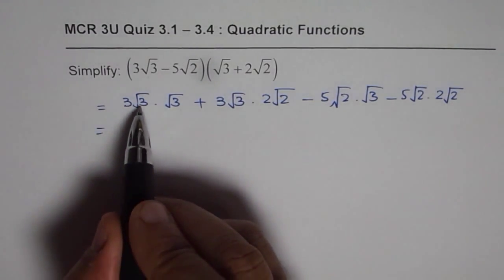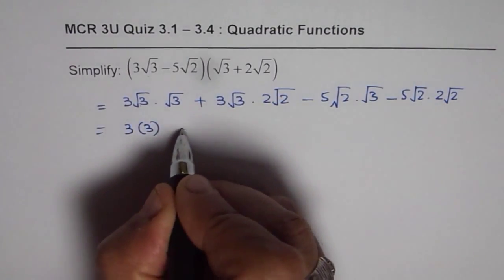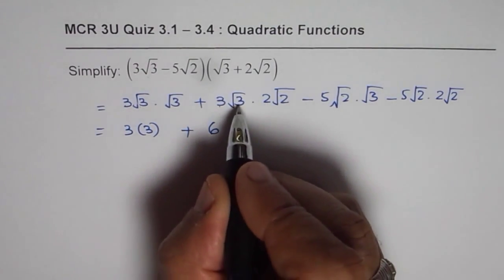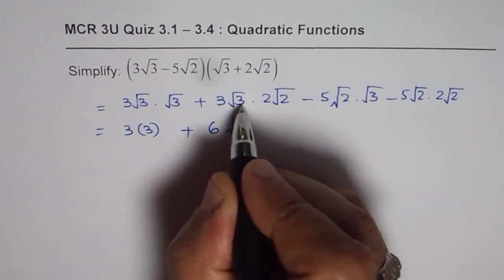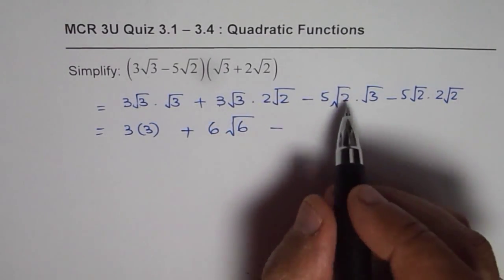Now, square root 3 times square root 3 is 3. So we get 3 times 3 plus. Now 3 times 2 is 6. Multiply the numbers and then the numbers inside the radicals. So 3 times 2 is 6, and we get square root of 6 minus 5.